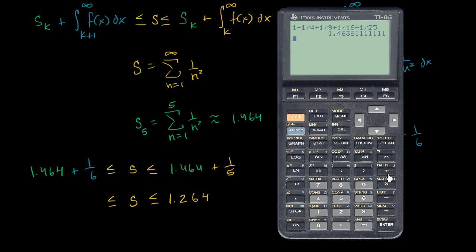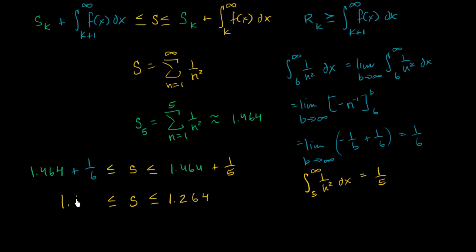On the lower bound side, adding one sixth to 1.464 gives approximately 1.630. So our compound inequality is 1.630 is less than or equal to s, which is less than or equal to 1.664. This means s is around 1.6 something — it could be 1.63, 1.64, 1.65, or 1.66. If we only care about precision to the tenths place, we know it's 1.6. Adding more terms to the partial sum would give even more precision.